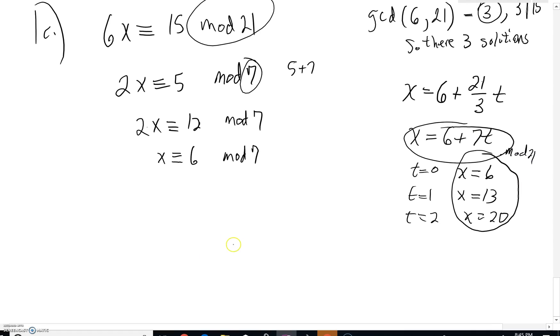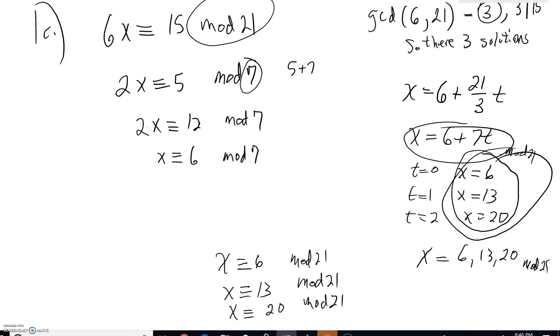So here are 3 answers, mod 21 mind you, that you could come up from this generator. Now if you were asked to write it out in terms of a mod, you could say x is congruent to 6, x is congruent to 13, x is congruent to 20, all of these would be in mod 21. Our answer previously was good. Even that's what the author did. Just writing these three out: 6, 13, 20 in mod 21.